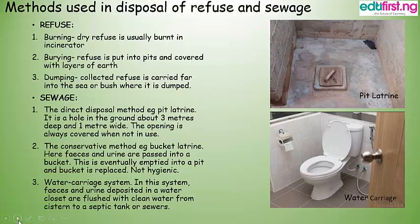Methods used in disposal of sewage include: 1. The direct disposal method, e.g. pit latrine — a hole is dug in the ground about 3 meters deep and 1 meter wide, and the opening is always covered when not in use. 2. The conservative method, e.g. the bucket latrine — feces and urine are passed into a bucket, which is emptied into a pit and replaced; this is not very hygienic. 3. Water carriage system — feces and urine deposited in a water closet are flushed with clean water to a septic tank or sewers.